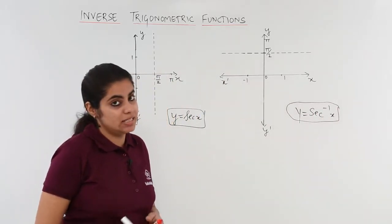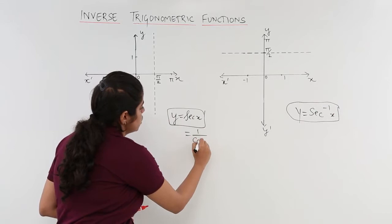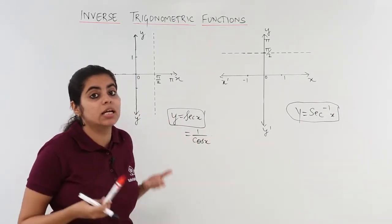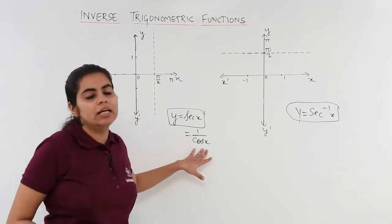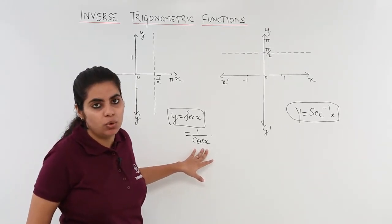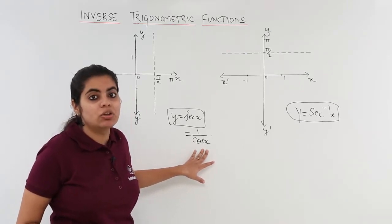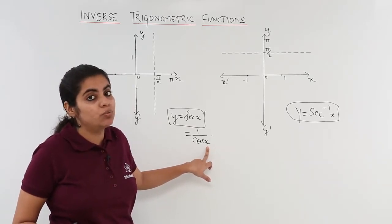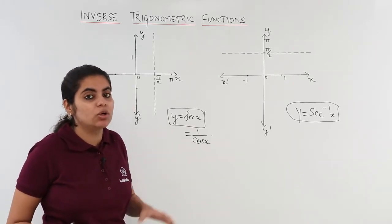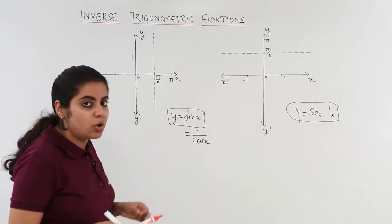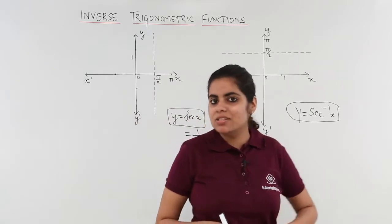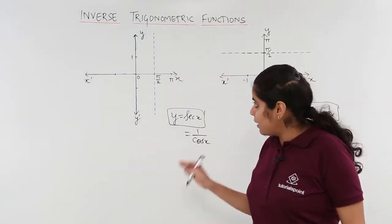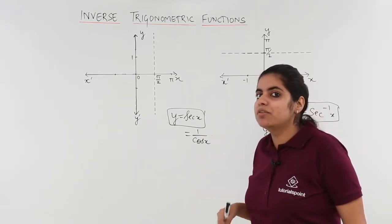Now what is secant x? Secant x is nothing but 1 upon cos x. So you need to consider only wherever you find things are defined. If the denominator in any case becomes 0, my value is actually not defined. So the x value can never be what? Can never be pi by 2. Why? Because cos pi by 2 is 0 and 1 upon 0 is not defined. So the value of x cannot be pi by 2. What else restrictions are there?